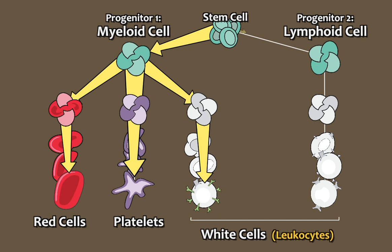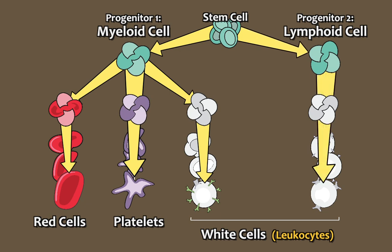The second progenitor cell is a lymphoid stem cell, which continues to mature and differentiate into many forms of white blood cells, also known as leukocytes. So we can see that leukocytes, or white blood cells, are born on both sides of the family tree, from the myeloid stem cell as well as the lymphoid stem cell.